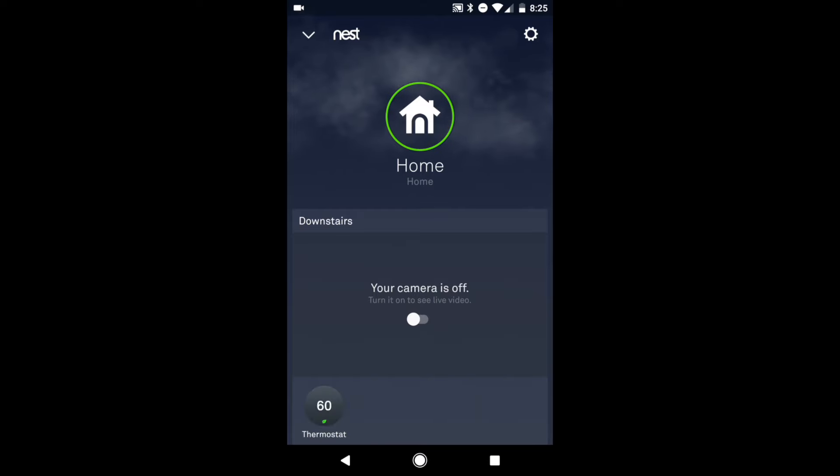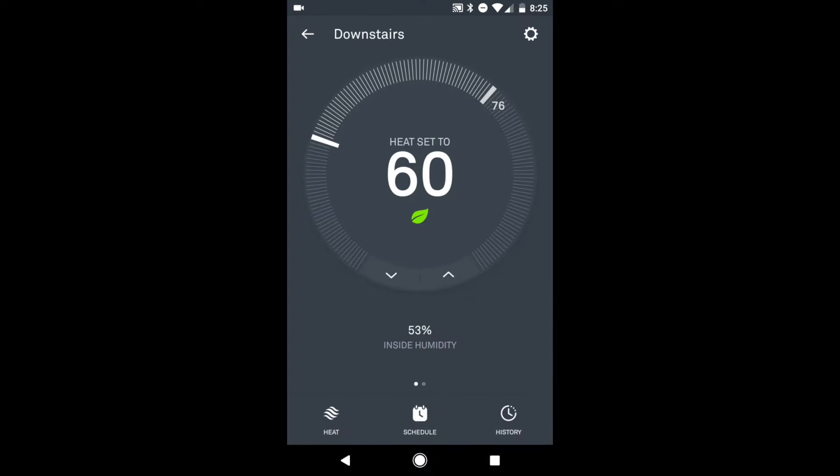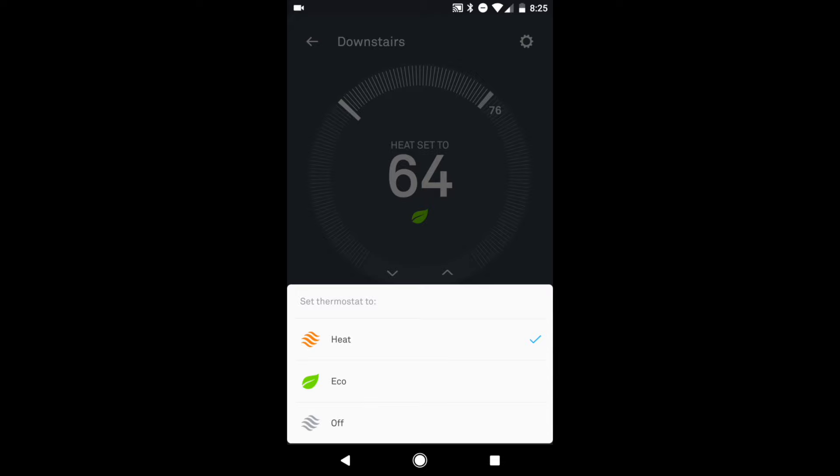Setting things in the app is pretty easy to do as well. Open up the app and tap on the thermostat you want to control. Then you can either drag the circle around the temperature to your preference or use the arrows. To change mode, hit the button on the bottom left hand corner and then tap on the mode you want to use.